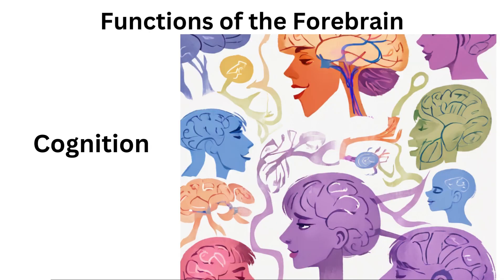The forebrain is central to our cognitive processes, including thinking, reasoning, problem-solving, and planning. The cerebral cortex is responsible for these complex mental functions.